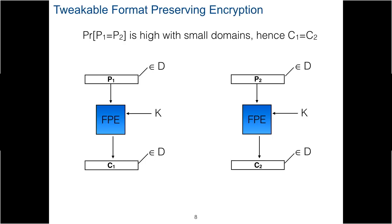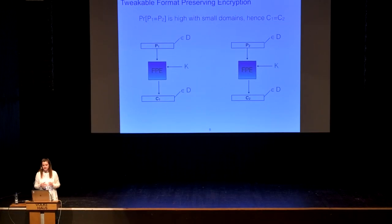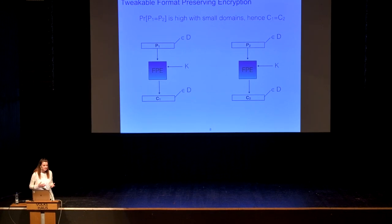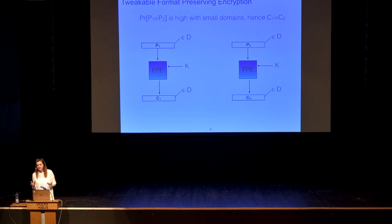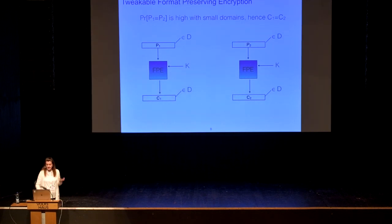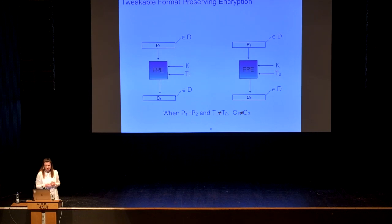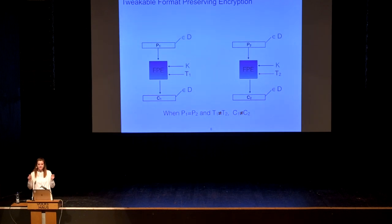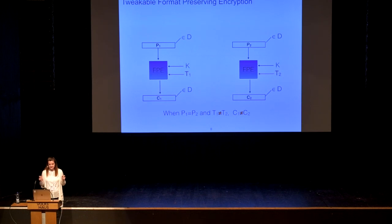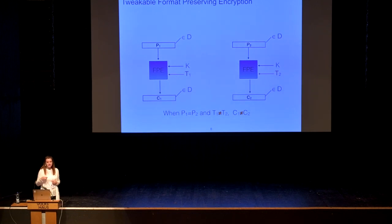FPE is, by design, a deterministic encryption because we want to preserve the size of the message in the cipher. Since FPE is designed for small messages, it's very likely that two plaintexts encrypted under the same secret key will produce equal ciphertexts. To escape from this, FPE introduces a notion called a tweak. As long as we have two different tweaks, two identical messages will be encrypted under the same key as two different ciphertexts. Tweaks are very essential for format-preserving encryption, and importantly, they are not part of the secret key — they are publicly available and under the control of the adversary.